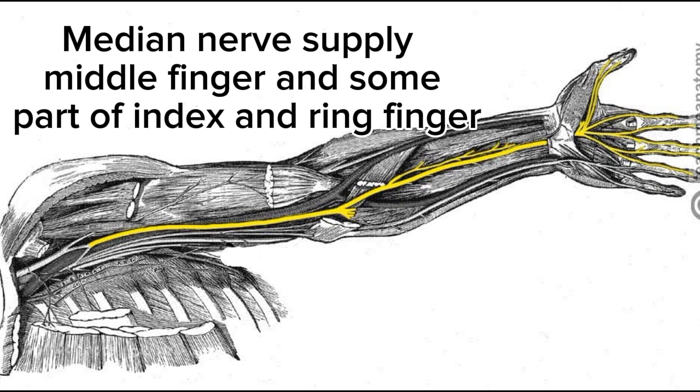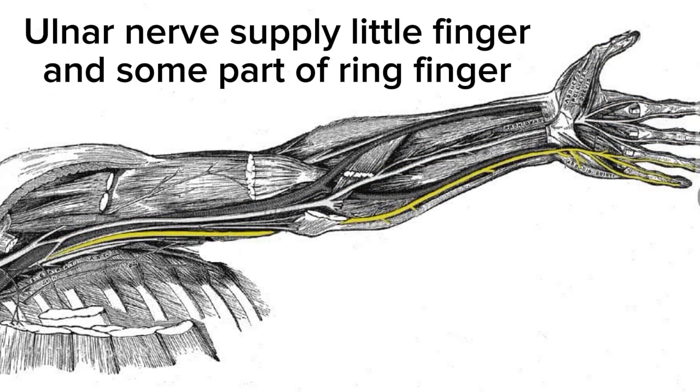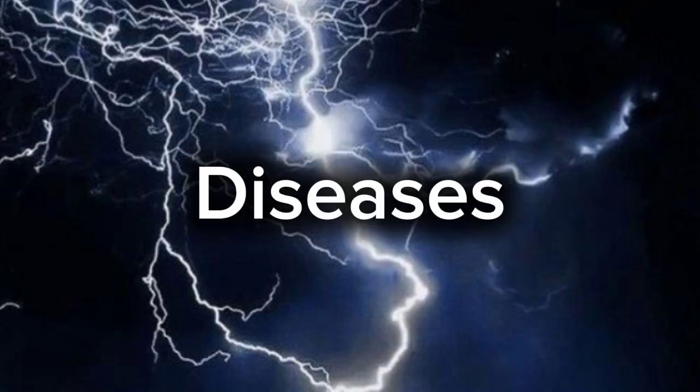The third nerve is the Ulnar nerve. The Ulnar nerve supplies our little finger and ring finger. Next, we move on to diseases.